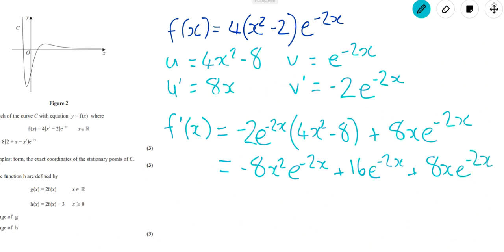Minus 8x squared times e to the minus 2x. And then we'll have plus 16 e to the minus 2x. And then we'll have 8x e to the minus 2x. And we can see then that we've got a common factor of 8 and we've got a common factor of e to the minus 2x.